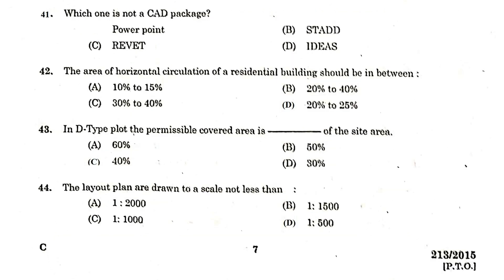Which one is not a CAD package? Options: PowerPoint, STAAD, Revit, Ideas. The answer is PowerPoint. The area of horizontal circulation of a residential building should be between 20 to 25 percent.